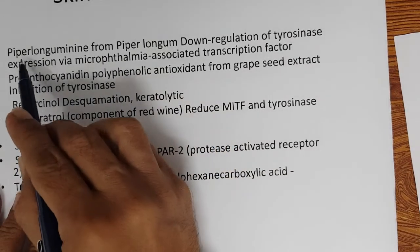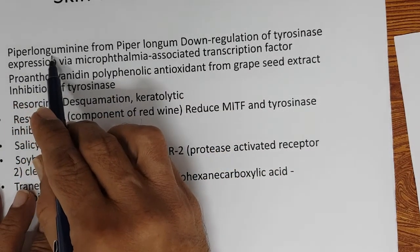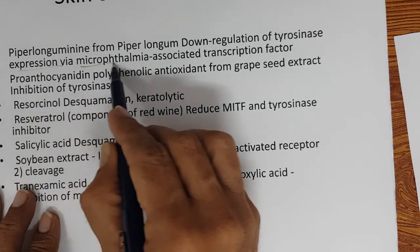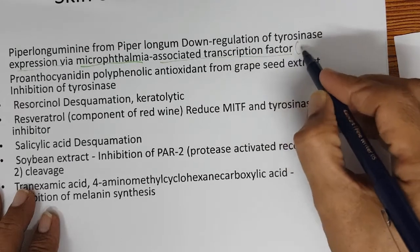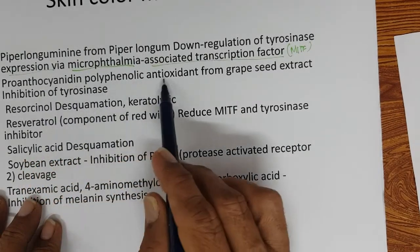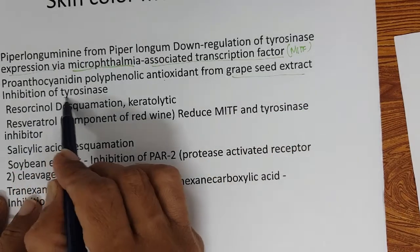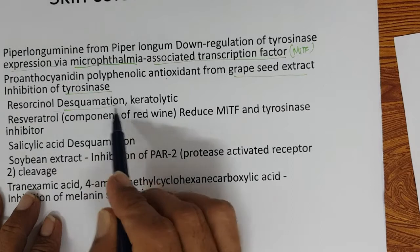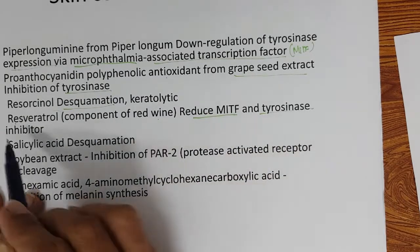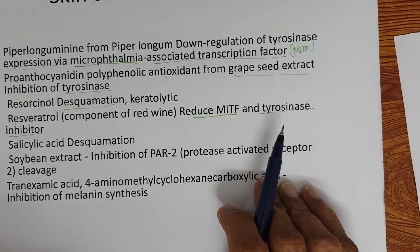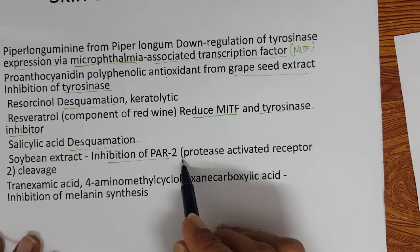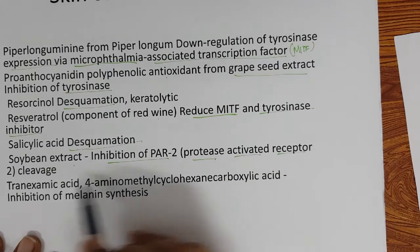Piperine from Piper longum downregulates tyrosinase expression via microphthalmia-associated transcription factor (MITF). Proanthocyanidins — polyphenolic antioxidants in grape seed extract — inhibit tyrosinase. Resorcinol works by desquamation. Resveratrol, a component of red wine, reduces MITF and acts as a tyrosinase inhibitor. Salicylic acid works by desquamation.